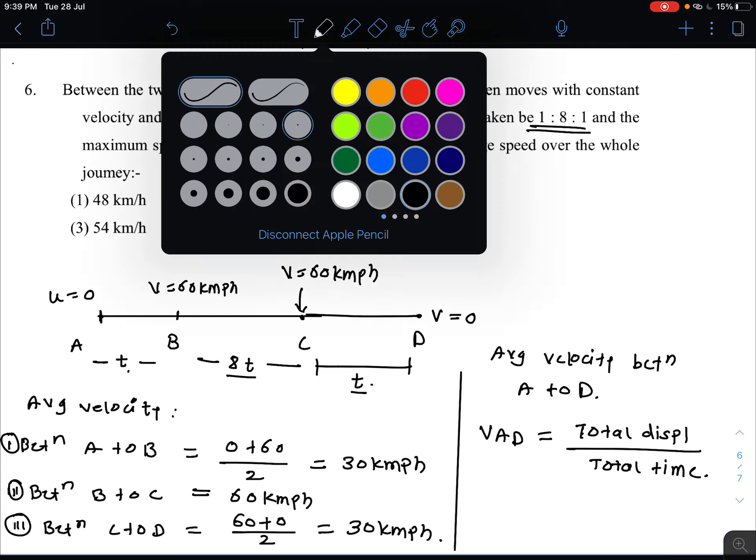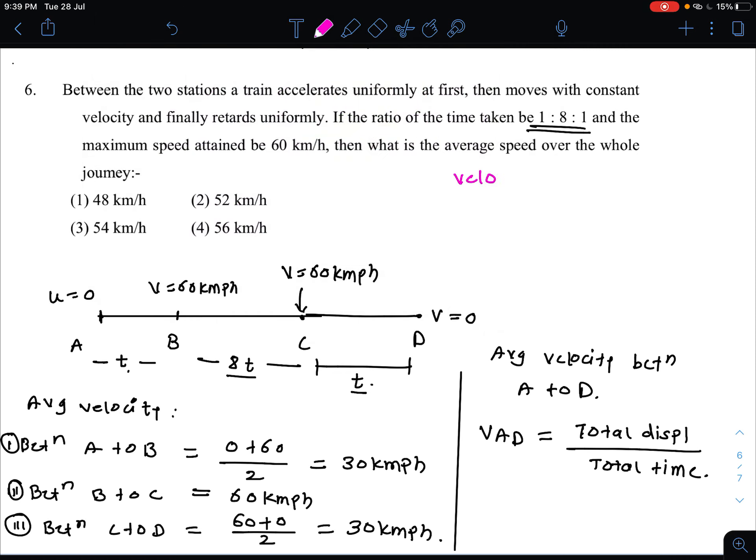Which is written here. Displacement equals velocity into time, okay? Total displacement, velocity and time terms. So velocity A to D average velocity is total displacement.